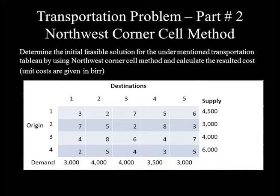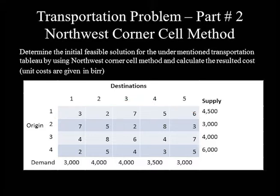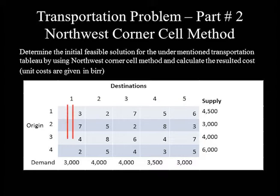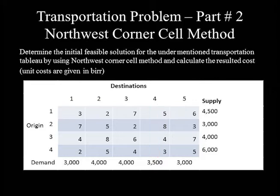Determine the initial feasible solution for the given transportation problem using the Northwest Corner method and calculate the resulting costs. This is a table containing four origins and five destination areas. The supplies from each origin are: Origin 1 = 4,500; Origin 2 = 3,000; Origin 3 = 4,000; Origin 4 = 6,000. The demands of each destination area are: Destination 1 = 3,000; Destination 2 = 4,000; Destination 4 = 3,500; Destination 5 = 3,000.